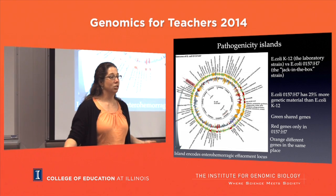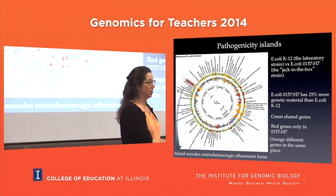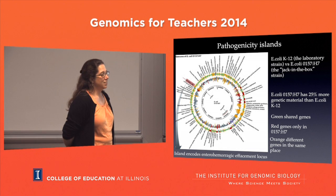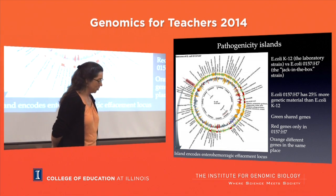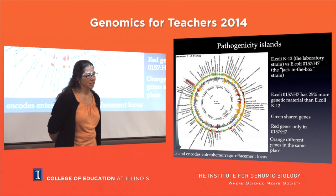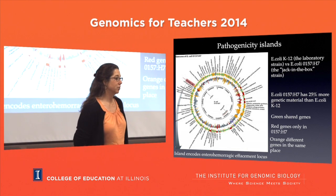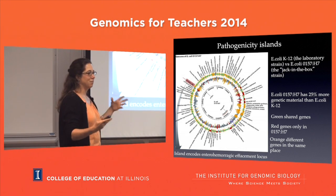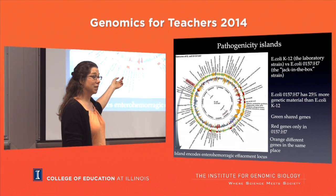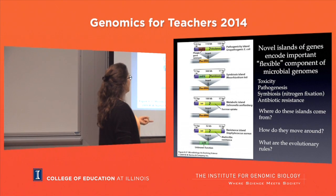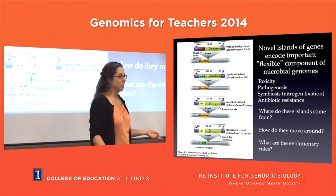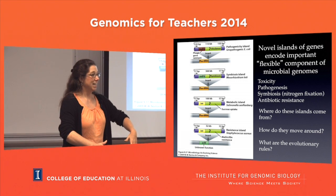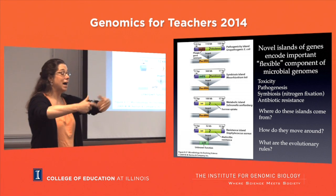These islands are coming and going and they're changing the physiology and pathogenicity of organisms. Is there really such a thing as the average E. coli, the average Staphylococcus? The idea people are working with now is the pan-genome: there's a backbone - the core genome - that defines E. coli or Staphylococcus or any organism you're working on. Then there's this variable genome, a part of the genome that's coming and going. We don't really know what the evolutionary rules are about what defines what can come and go.